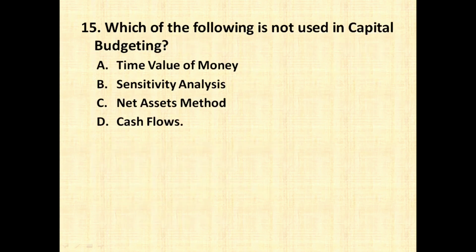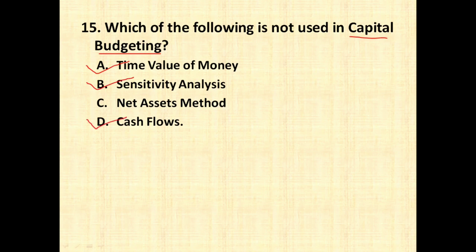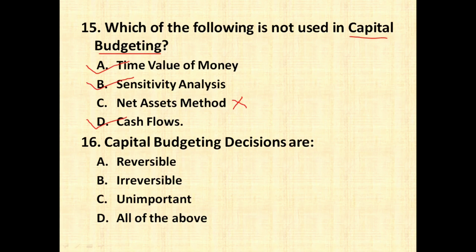The next question is: which of the following is not used in capital budgeting? Capital budgeting is a very important topic, so many questions are asked on it. Time value of money — we definitely use present value. Sensitivity analysis — we definitely use in capital budgeting. Cash flow — we also use in capital budgeting. So the net asset method is not a part of capital budgeting techniques.